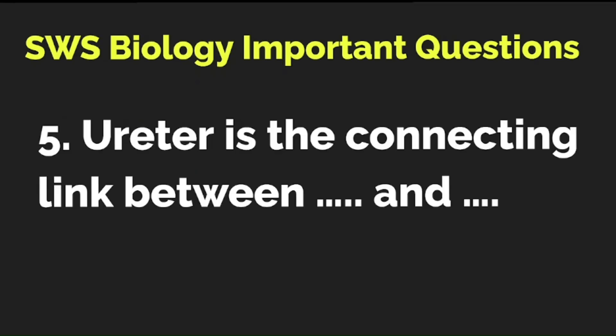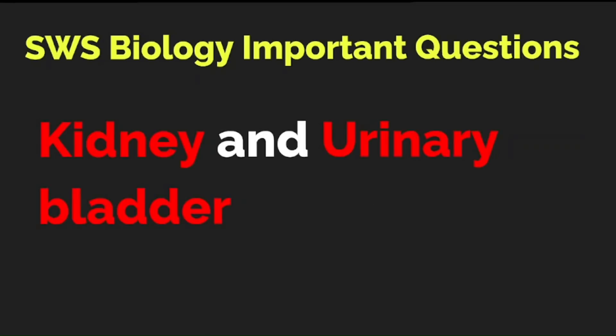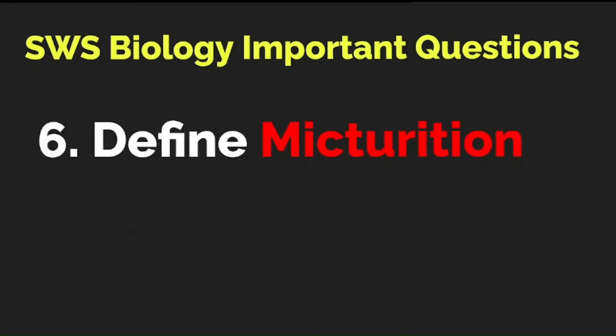The ureter is the connecting link between dash and dash — a pretty easy one. The correct answer is: the ureter is the connecting link between the kidney and the urinary bladder. Define micturition — a definition can also be asked in exams.